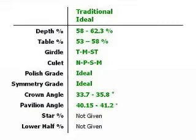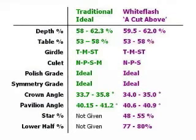In 2005, the AGS changed to performance assessment, and diamonds at the outer limits of this traditional range may no longer receive their top grade. But those near the middle will always be considered top performers. For example, here are the parameters we prefer for our White Flash A Cut Above hearts and arrows diamonds. This tight range of measurements never fails to produce diamonds that receive the highest ratings in proportions and performance grading systems.